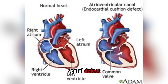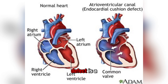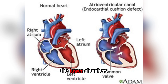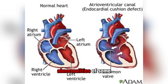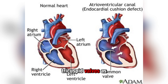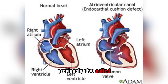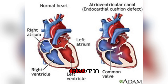3. Atrioventricular Septal Defect: An atrioventricular septal defect is a hole in the center of the heart — the wall that separates the upper chambers from the lower chambers. Most people with this defect also have abnormalities of their mitral and tricuspid valves. It was previously called an atrioventricular canal defect or an endocardial cushion defect.